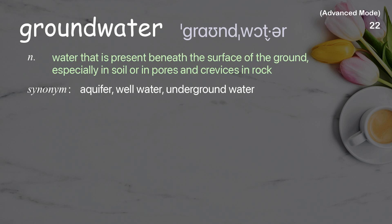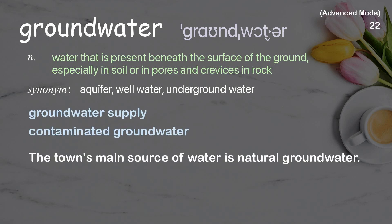Groundwater: water that is present beneath the surface of the ground, especially in soil or in pores and crevices in rock. Examples: groundwater supply, contaminated groundwater. The town's main source of water is natural groundwater.